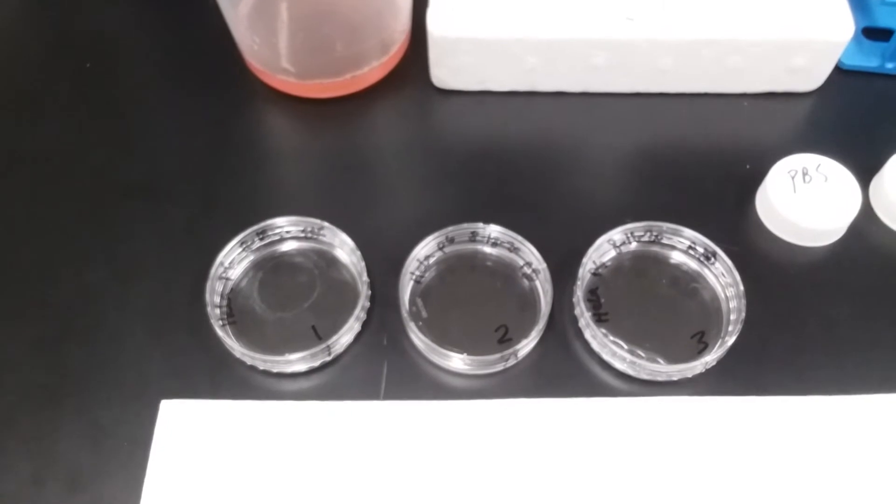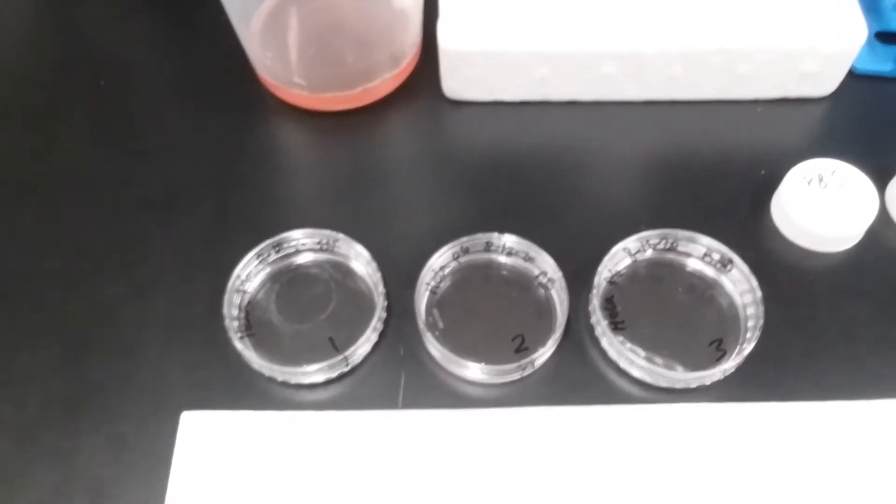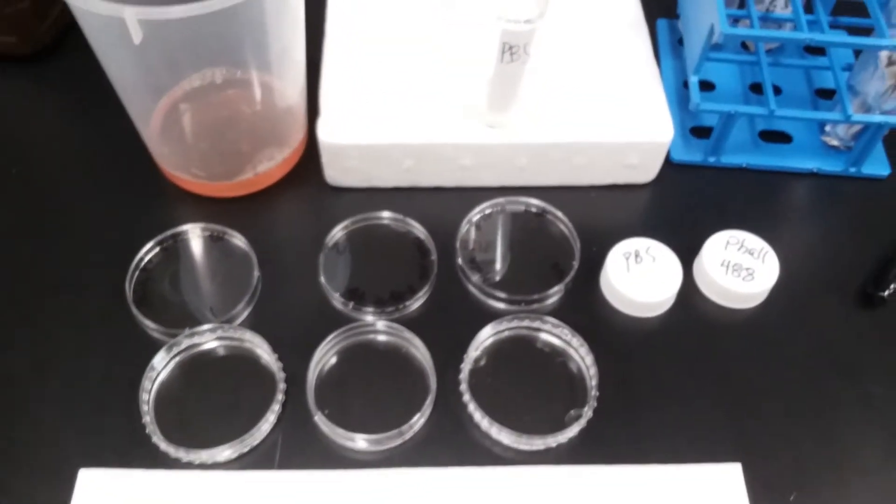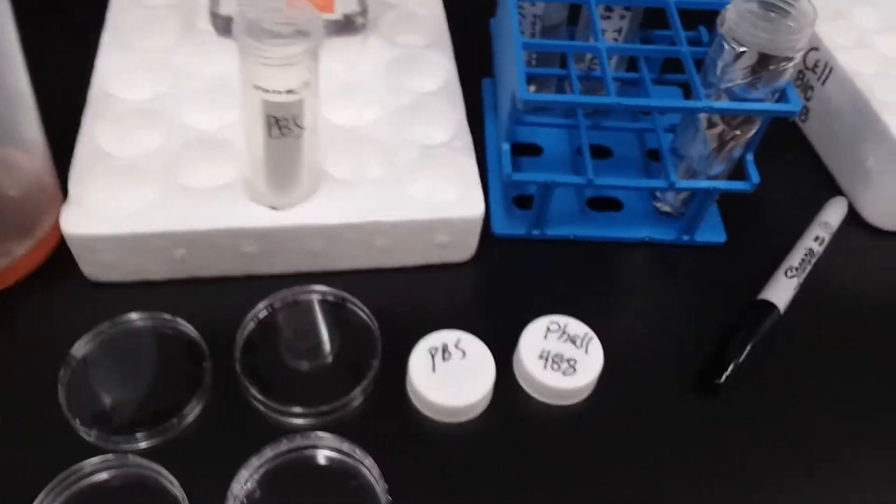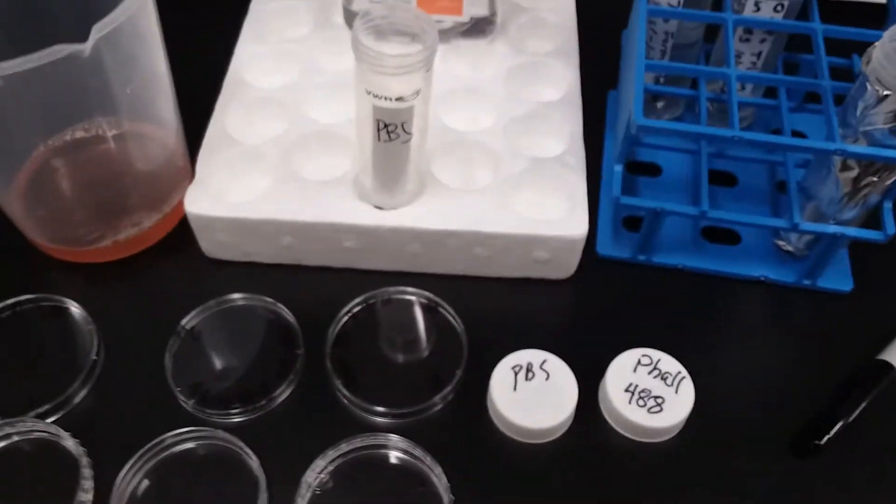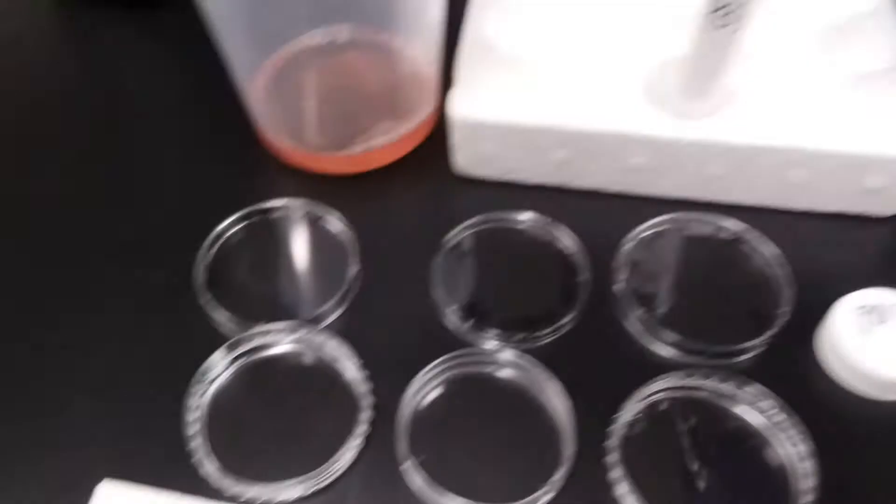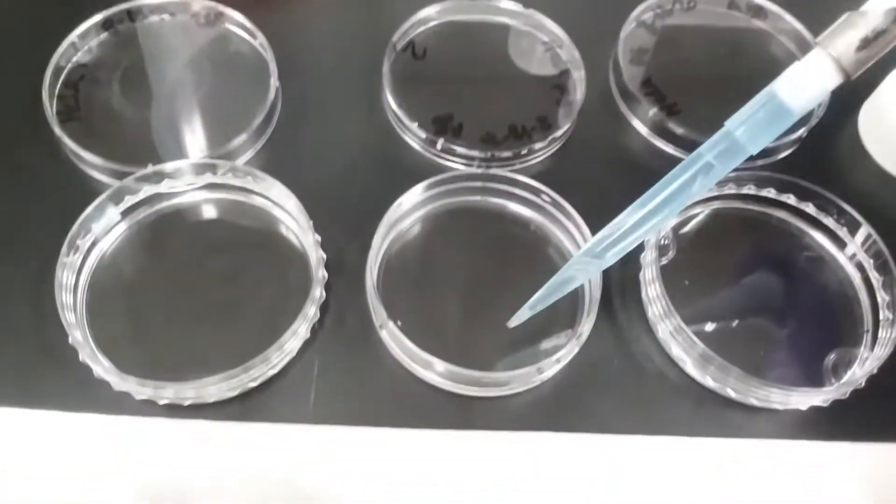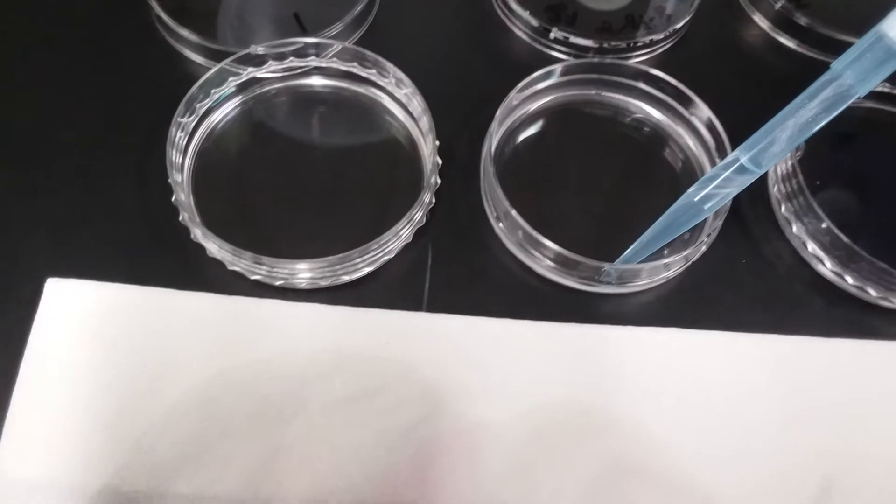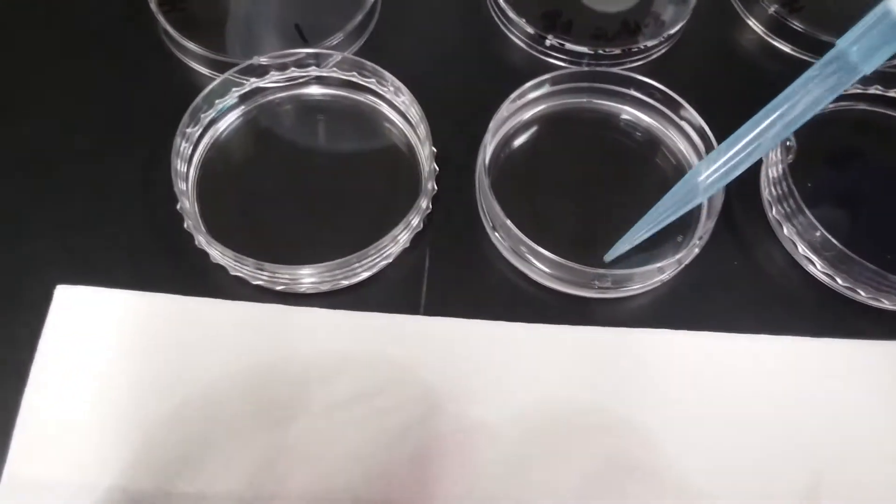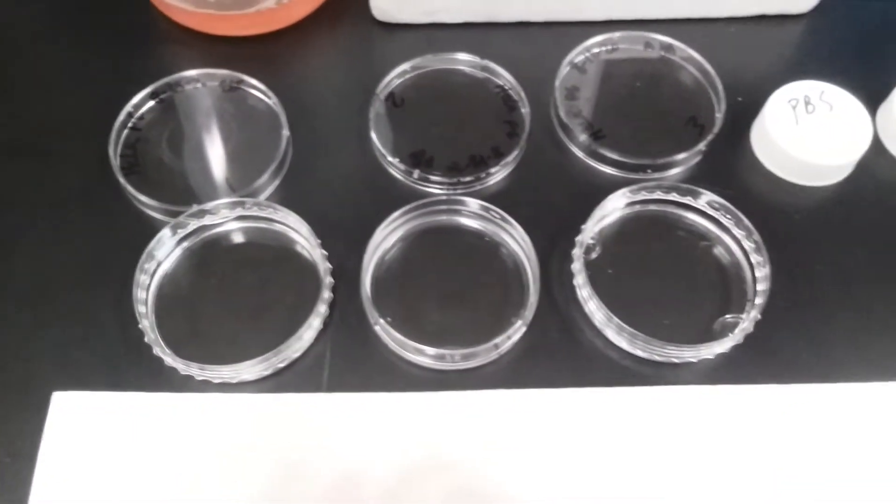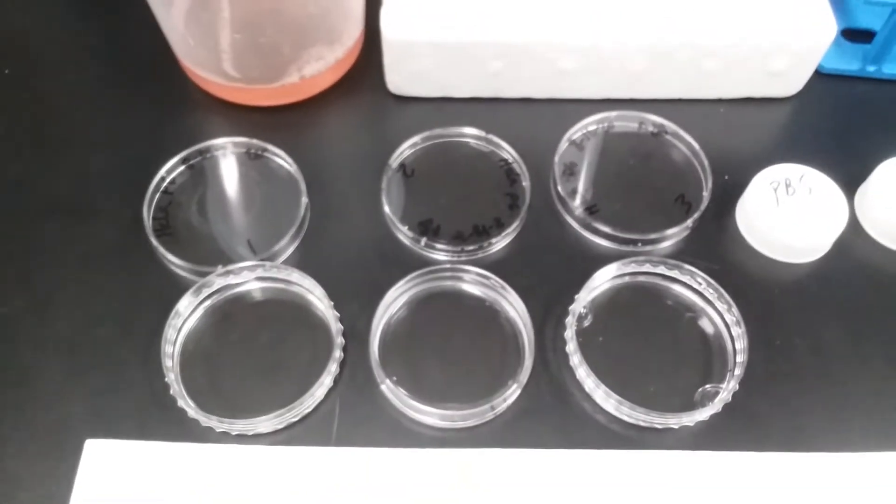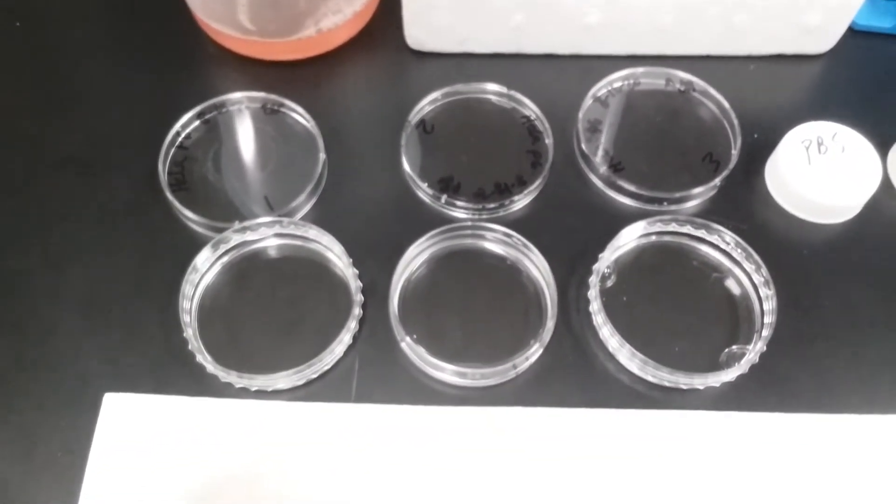I'm going to take the triton X off. So I took the triton X off all 3 plates, and now I'm going to run a phalloidin control. So what I am going to do is I am going to get 1 mL of PBS, and I'm going to put it into dish 2. This is a negative control to make sure that the phalloidin isn't causing any fluorescence on its own.